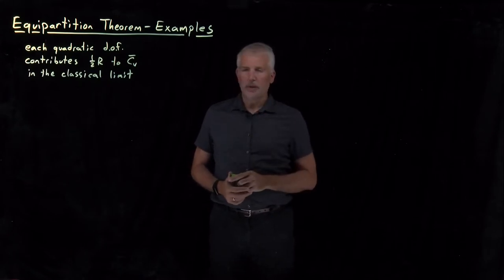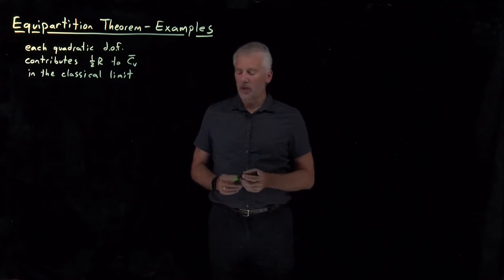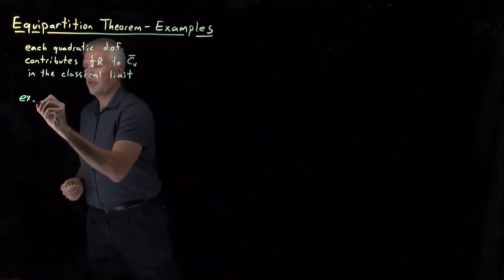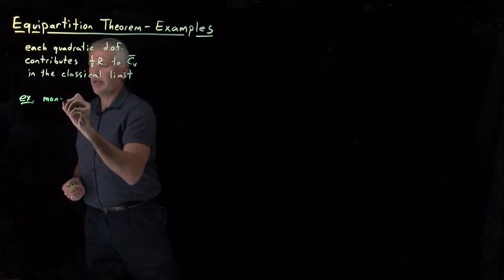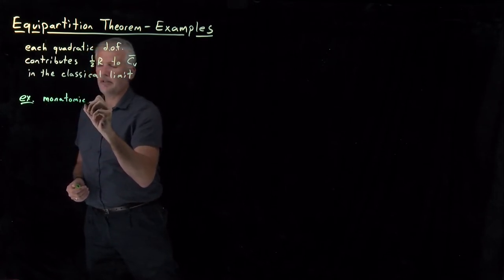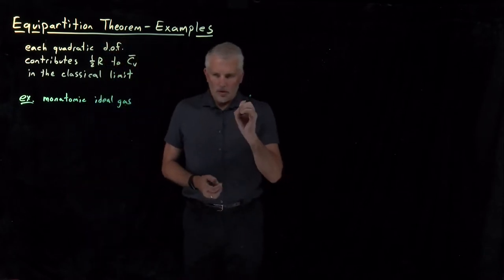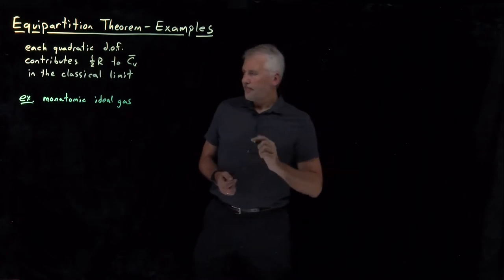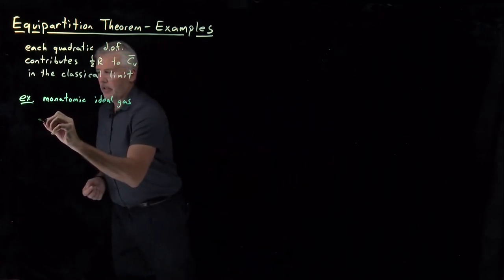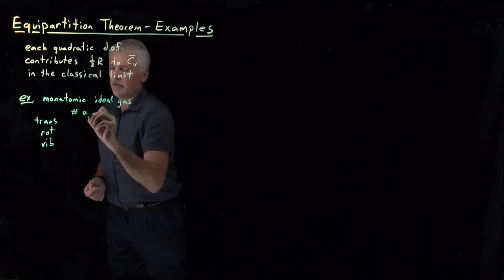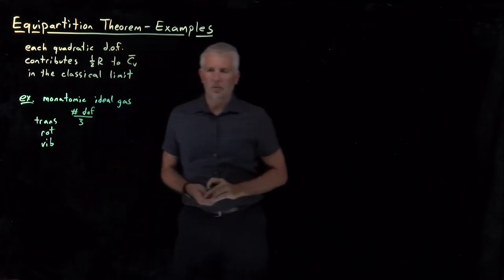Let's see if we can use that to actually make some interesting predictions about the heat capacities of molecules. The easiest example is a monatomic ideal gas — an ideal gas consisting of only one atom. If we start counting degrees of freedom so that we can use the equipartition theorem, we know that since it's just one atom, it can translate.